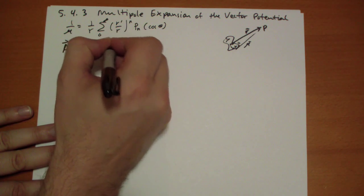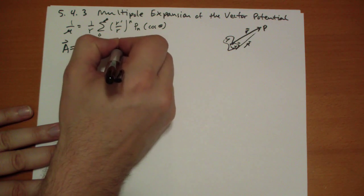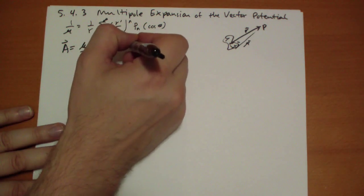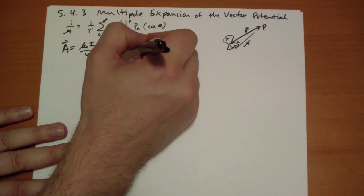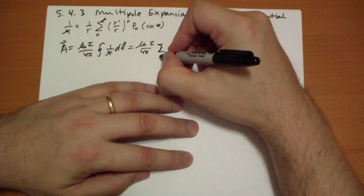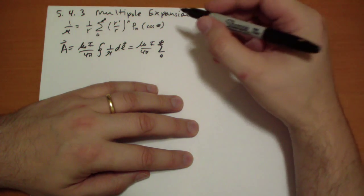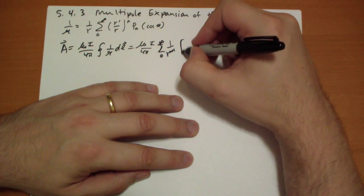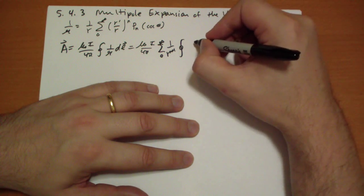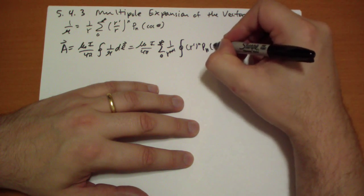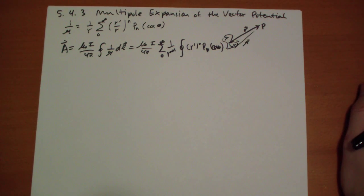So basically we're going to get terms that will not depend on r, this r, but only on the r prime. And then we can calculate just multiplying by factors of r. So the vector potential can be rewritten as μ₀i over 4π, closed loop integral, 1 over curly r, dl vector, which can be rewritten μ₀i over 4π, the sum from 0 to infinity of 1 over r to the n plus 1. Then the integral, the closed loop integral of r prime to the n and the Legendre polynomial of cos theta.